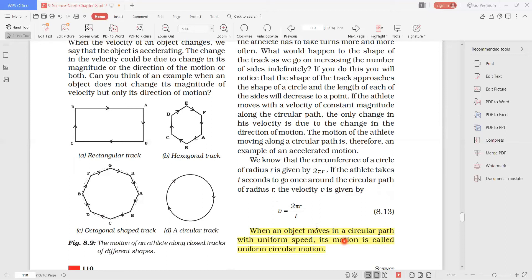When an object moves in a circular path with a uniform speed, its motion is called uniform circular motion. Uniform speed means covering equal distance in equal intervals of time. When an object is closed,